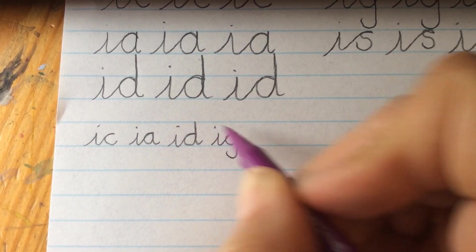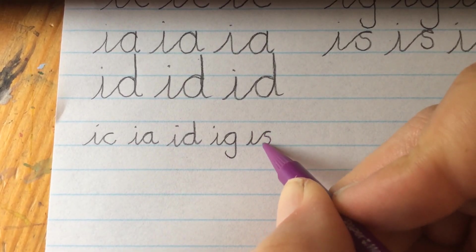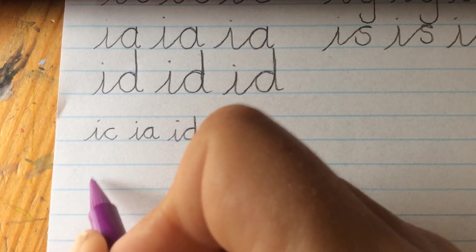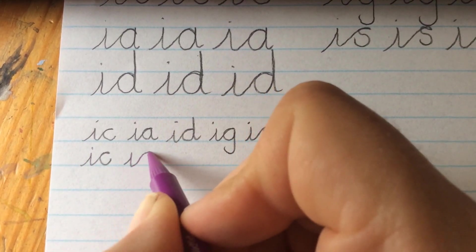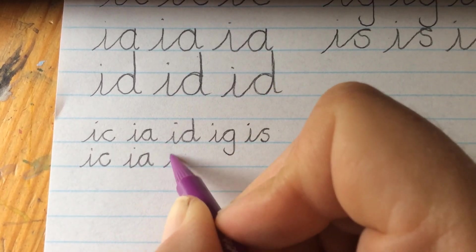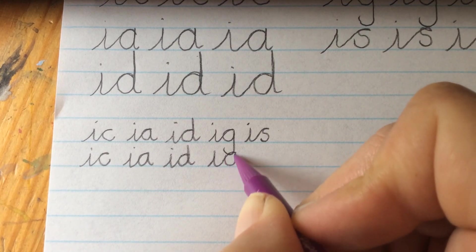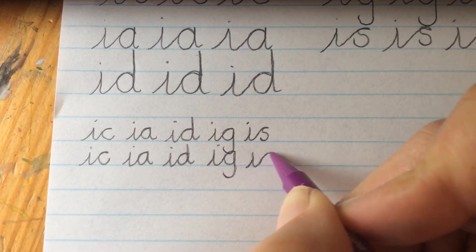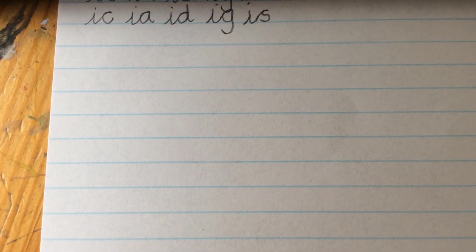The g just goes halfway down the next line, and you can keep practicing those letter patterns until you've got your joins perfect and you are happy to move on, always aiming for those diagonal joins.